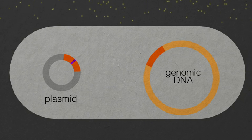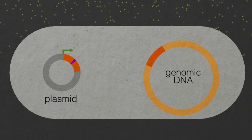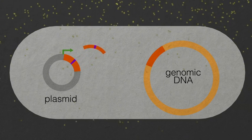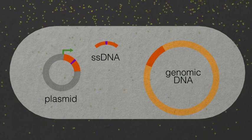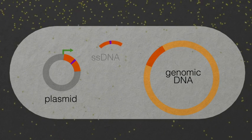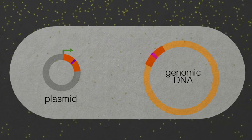In the presence of an input, like a small molecule, single-stranded DNAs are produced from a gene cassette. Based on sequence homology, the single-stranded DNA can then be recombined into the cell's genomic DNA.